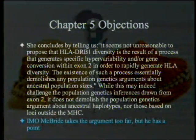And this is how you make an argument: if part of your argument is weak, you simply leave it out. Gauger concludes by telling us it seems not unreasonable to propose that HLA-DRB1 diversity is the result of a process that generates specific hypervariability and/or gene conversion within exon 2 in order to rapidly generate HLA diversity. The existence of such a process essentially demolishes any population genetic arguments about ancestral population sizes. While this may indeed challenge the population genetics inference drawn from exon 2, it does not demolish the population genetics arguments about ancestral haplotypes or those based on loci outside of the MHC. Of course she didn't introduce the other ones, so the fact that she didn't argue against them is not terribly surprising.